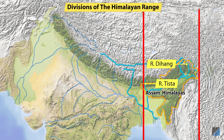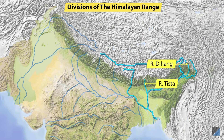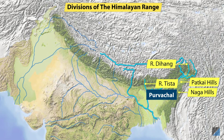Beyond the Dihang gorge, the Himalayas bend sharply to the south and run in a more or less north-south direction along India's eastern border with Myanmar. These ranges are collectively known as the Purvachal. The important hills of the region are Patkai hills, the Naga hills, Manipur hills and the Mizo hills. These hills are mostly composed of strong sandstone, which are sedimentary rocks, and the region is covered with dense forests.